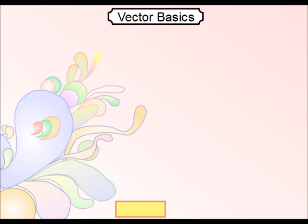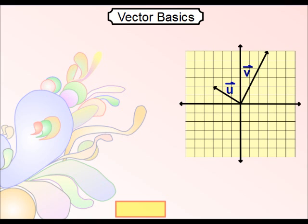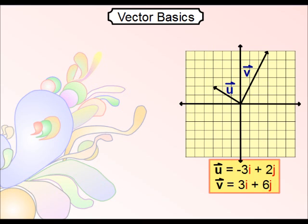So now, what about magnitude? Let's say we have these two particular vectors, a different u this time, and a vector v. Here they are in terms of i and j.